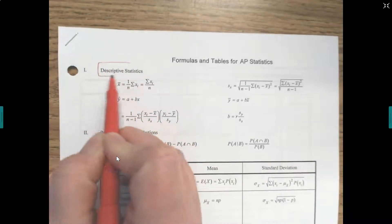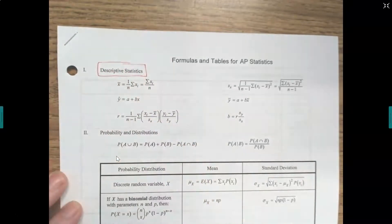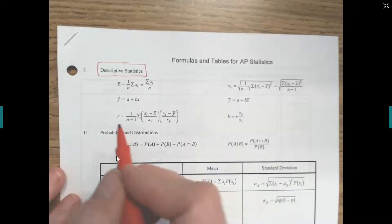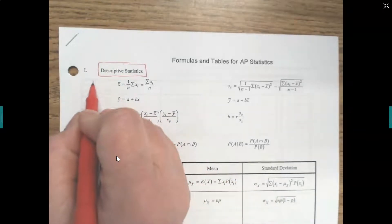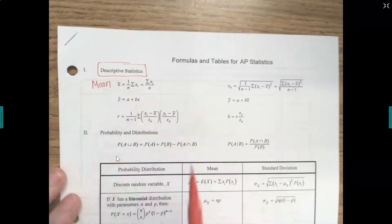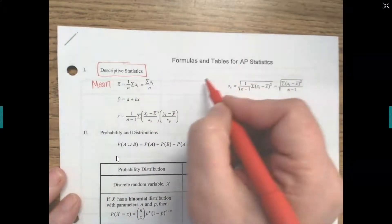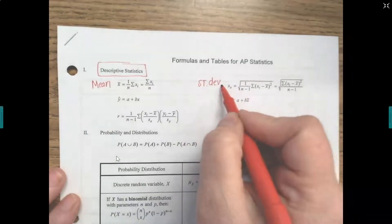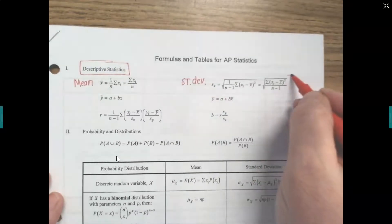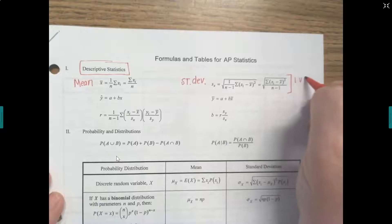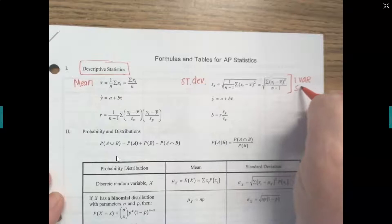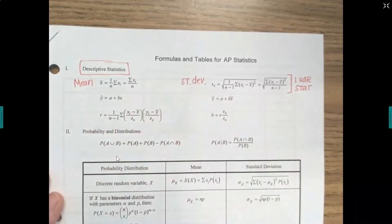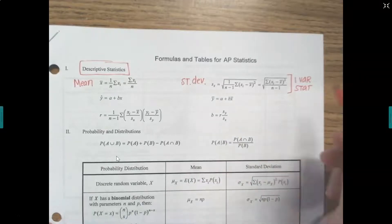Our first topic was descriptive statistics. The formulas for descriptive statistics: x-bar is the mean, and s sub x is our standard deviation. These are one-variable stats, so if you enter the data into your calculator and run a one-variable stat, you will find x-bar and standard deviation there — you really don't need to calculate them by hand.